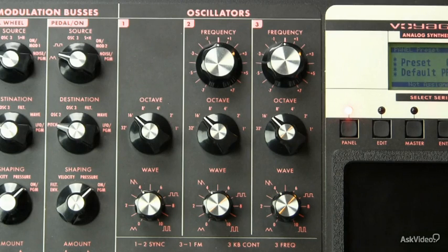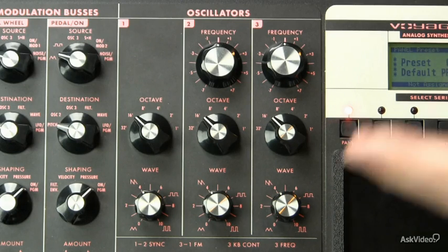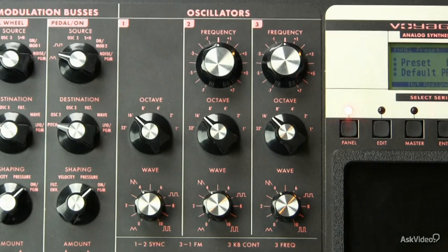There is no setting for specifically a sawtooth wave or a square wave. There is a free-turning knob that allows you to choose a wave shape that can be varied.